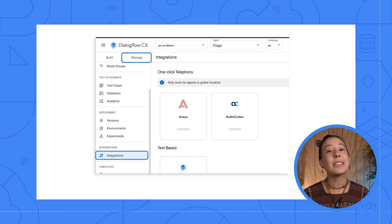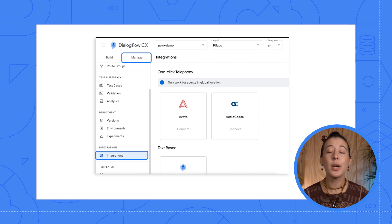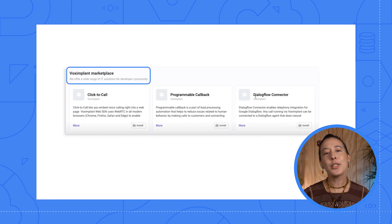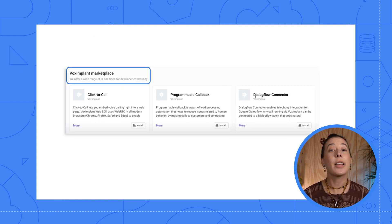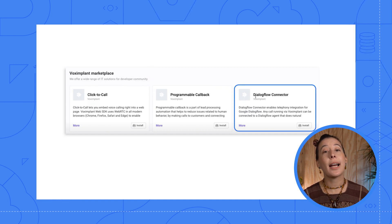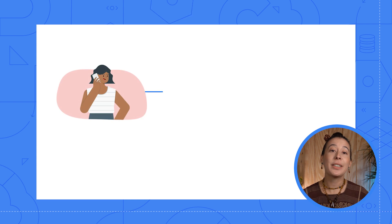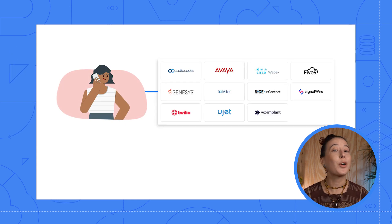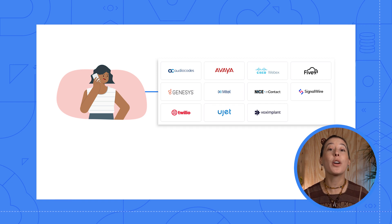The following partners are listed as of the making of this video, which are Avaya and AudioCodes. There are also independent integrations that are not built-in, created by organizations and individuals, built using the Dialogflow API. As a friendly heads up, when you need support for any telephony integration, the partners are the folks that will assist you.